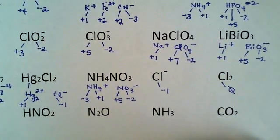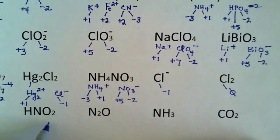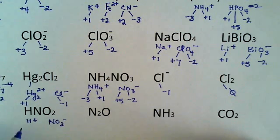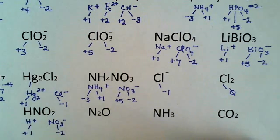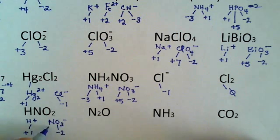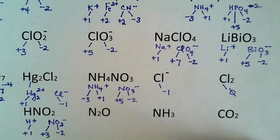HNO2 you might recognize as an acid. An acid is when a proton combines with something like the NO2 minus ion, and that's nitrite. So this is plus 1. Oxygen is minus 2. Times 2 is minus 4. Overall minus 1. So the nitrogen in the nitrite ion is a plus 3, whereas the nitrogen in the nitrate ion is a plus 5.